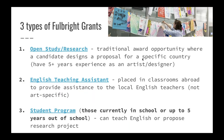There are three types of Fulbright grants. There's open study and research, which is the traditional award opportunity — designing a proposal for a specific country, assuming about five or more years of experience as an artist, designer, or scholar. In contrast, the student program is for people currently in school or up to five years out of school, so graduate students may find that of more interest. The other option is the English teaching assistant, where you're placed in a classroom abroad to assist local English teachers — not art or design specific.